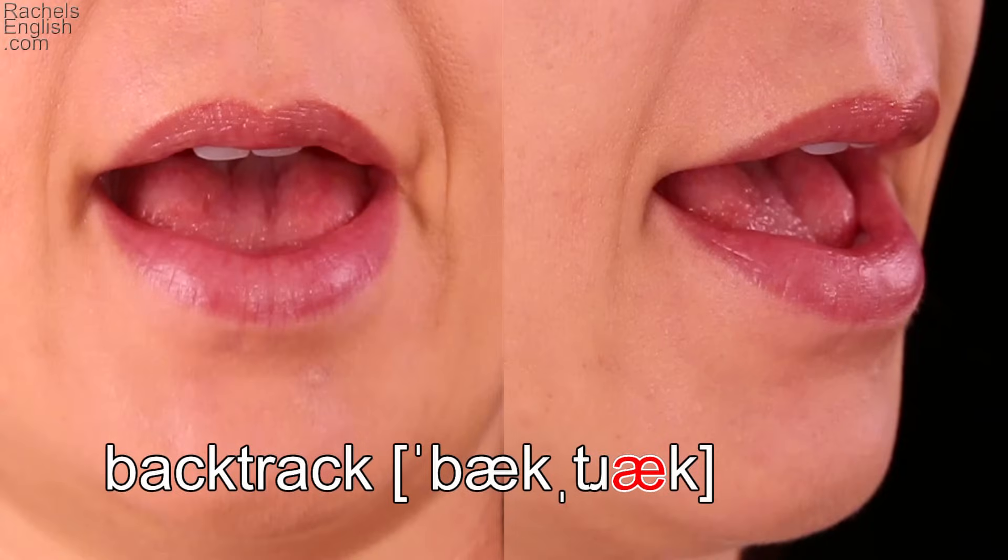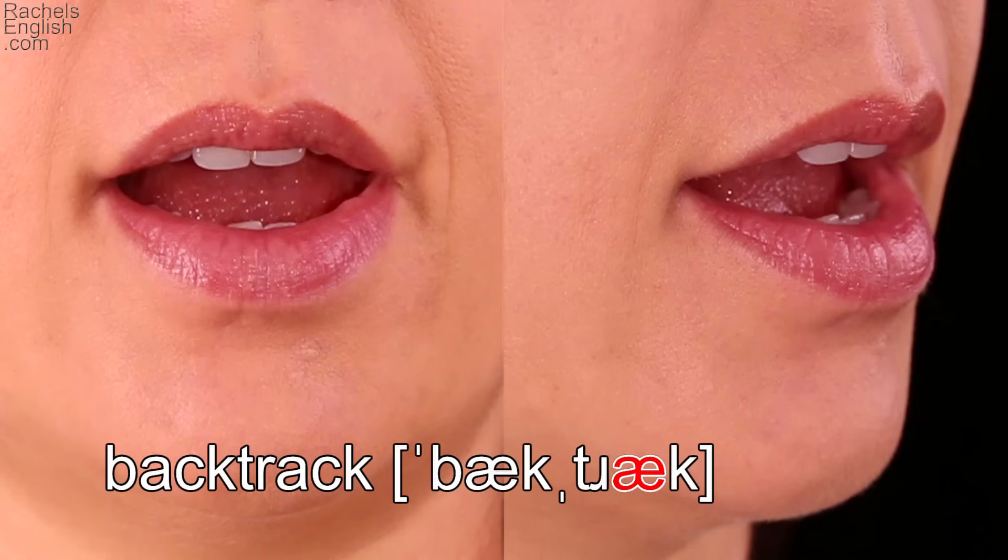This vowel is unstressed in the second syllable of backtrack. Let's look up close and in slow motion. In the first stressed syllable, the jaw drops and we see the corners of the lips pull back and up for the stressed AA. In the unstressed syllable, the jaw drops less.